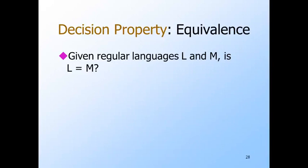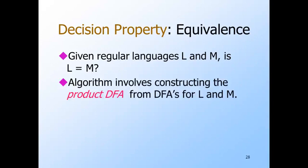We next take up the question of testing whether two regular languages are the same. We suppose we're given representations for two languages L and M. Whatever representation we're given, we convert to DFAs, and then combine those DFAs into a single DFA that in a sense runs both in parallel — we call it the product DFA.